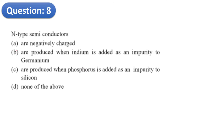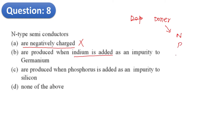Question 8 is about n-type semiconductors. The option that semiconductors are negatively charged is wrong — semiconductors are neutral devices. The option that n-type is produced when indium is added to germanium is wrong, since indium is a third group element. However, when phosphorus is added — phosphorus belonging to the fifth group element — that does produce n-type semiconductor. So option C is the right answer.